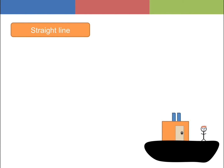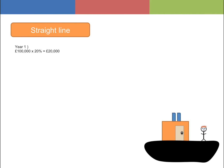For the straight line method, for the first year you would take £100,000 and times this by 20%, which is £20,000. For year 2 you would then take the same £100,000 and times this by 20% again, which gives you £20,000.